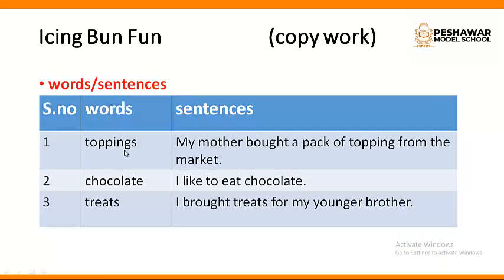Then you have to make sentences of these words. Number one — topping: my mother bought a pack of toppings from the market. Toppings are the jellies, candies, or sprinkles to add beauty to the cake. Number two — chocolate: I like to eat chocolate. Number three — treats: I brought treats for my younger brother. Treats are the candies, jellies, nuts, etc. You can make your own sentences — I have made sentences for you, but you should try to make your own, because these are very simple words.